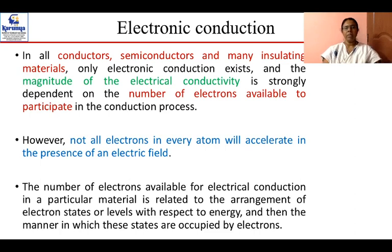All conductors, semiconductors, and many insulating materials show electronic conductivity, which is strongly based on the number of electrons available to participate in the process. As we saw in the previous video, σ = nqμ, where n is the number of charge carriers — that is, the number of electrons available to participate.